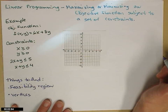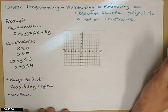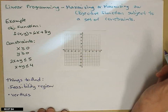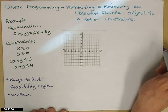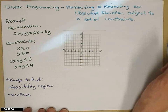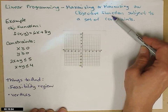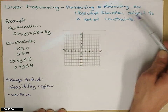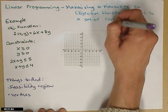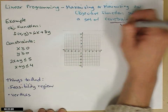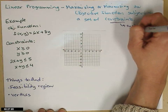One thing that algebra teachers really like is if we get time to get to the linear programming section of your algebra books. It seems like it pulls a whole lot of things together, plus it's just really cool. What this is, is we will be maximizing or minimizing an objective function that will be subjected to a set of constraints. These constraints will be a system of inequalities.